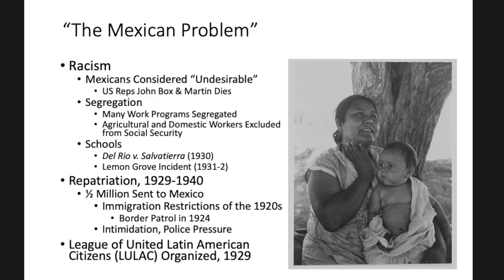Partly out of this climate, you see the creation of an organization called the League of United Latin American Citizens. This was organized in 1929 in Corpus Christi, Texas, formed out of other organizations that came together to unite their power and numbers and present a stronger front against segregation and discrimination. LULAC continues even until today — it is one of the largest and oldest Mexican American civil rights organizations in the United States, and we'll see their activities in future decades and future presentations.